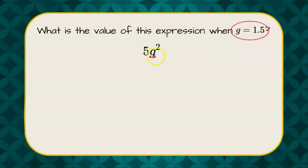So first let's understand what this expression states. This is 5 with an invisible multiplication sign, and then g squared is g times g. We're going to take the value 1.5 and put it in for the values of g. So we're asked to do 5 times 1.5 times 1.5.